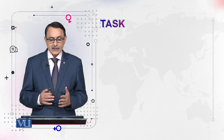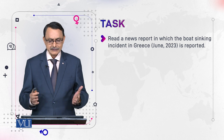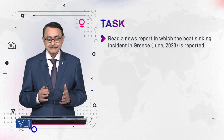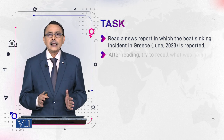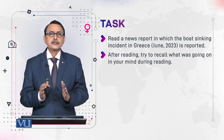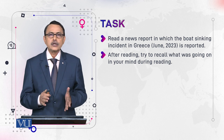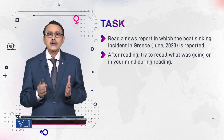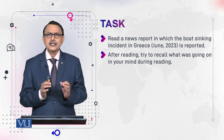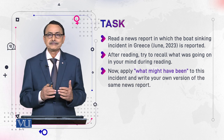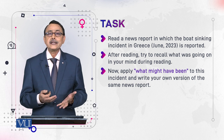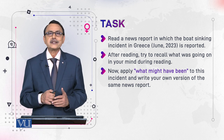Here is a task for you to understand the ideas we have discussed. Read a news report in which the boat sinking incident in Greece is reported. During your reading, try to capture what was going on in your mind and write it down. After that, question yourself 'what might have been' and write another version of the same incident. Then see how far the ideas of possible worlds we have discussed in this module are applied.